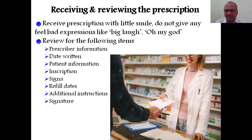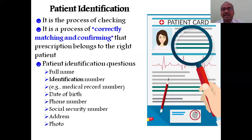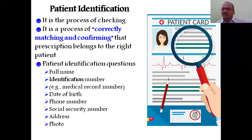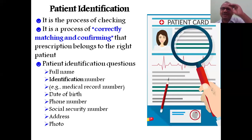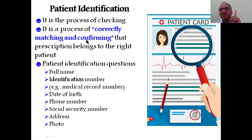Step two is patient identification — either you are giving medication to the correct patient or not; this is very, very important. If you give medication to the wrong patient, serious harm can result. Patient identification is the process of correctly matching and confirming that the prescription belongs to the right patient — either it is the right person or the wrong person.